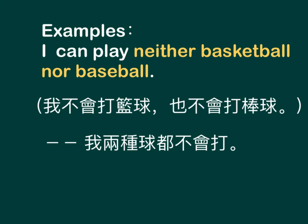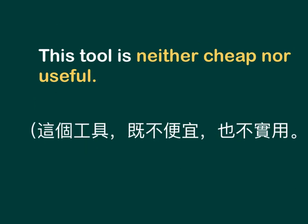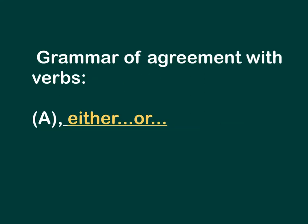Examples: I can play neither basketball nor baseball — 我两种球都不会打 (I can't play either sport). This tool is neither cheap nor useful — 这个工具既不便宜也不实用 (This tool is neither cheap nor useful). Grammar of agreement with verbs, part A.